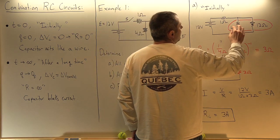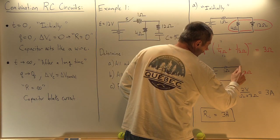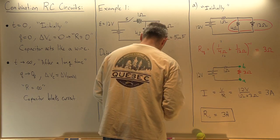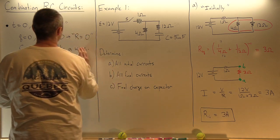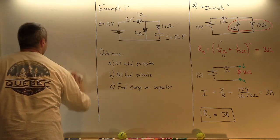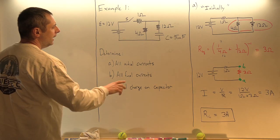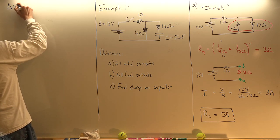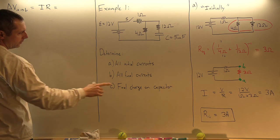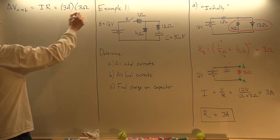Now I need to find the currents in the 4-ohm and 12-ohm branches. The current splits — maybe 1.5 and 1.5, or maybe one takes more than the other. To find that, like in a simple combination circuit, I'll find the voltage from point A to point B. The voltage from A to B equals IR: 3 amps times 3 ohms, which is 9 volts.